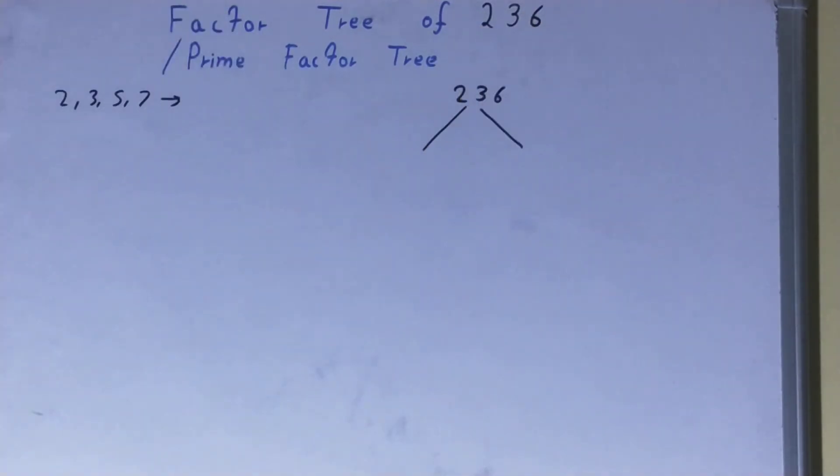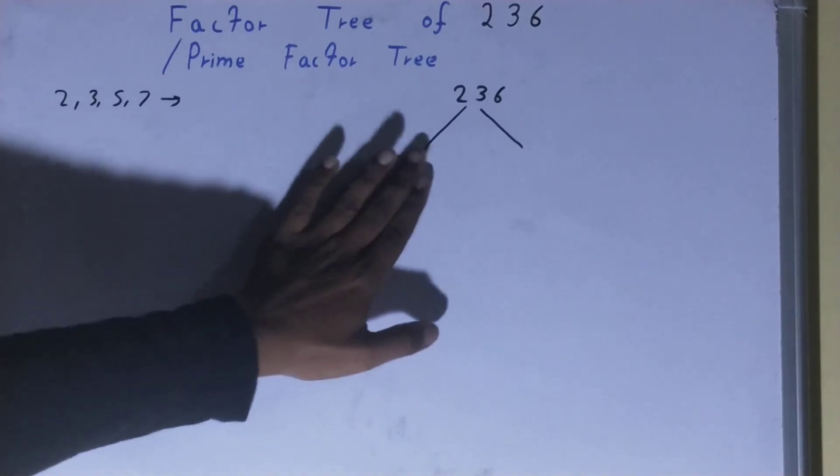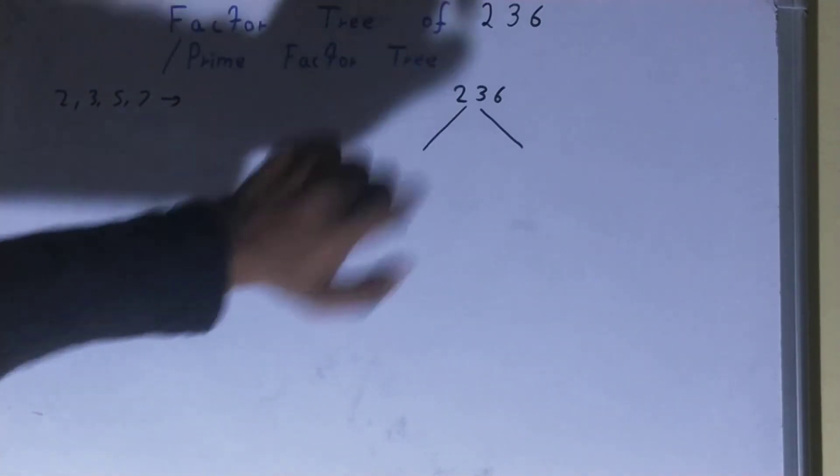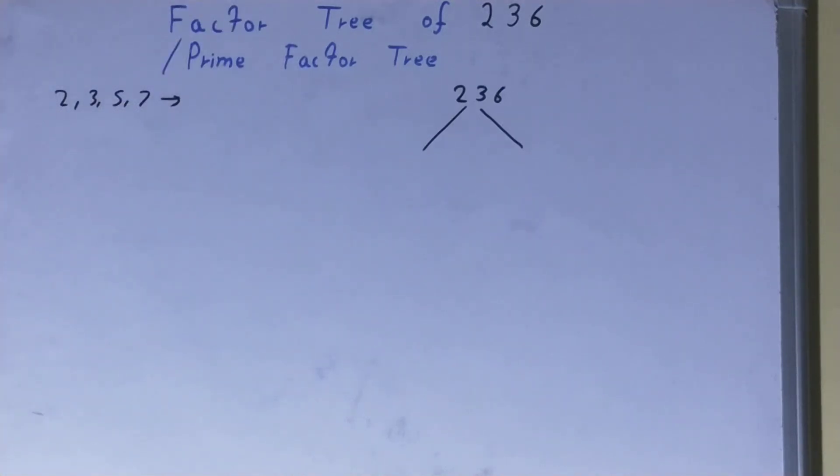So what we do is we factorize the number into groups of two or sets of two, and the rule is one of the numbers should be a prime number. Because of this, we check: is the number 236 divisible by 2? Yes. So one of the numbers will be 2, the other will be whatever we get after dividing. So 236 divided by 2, what we get? We get 118.